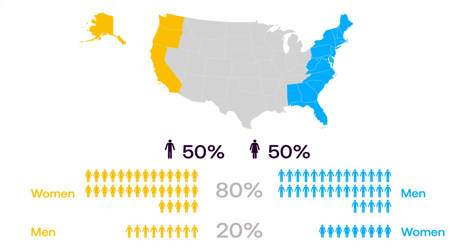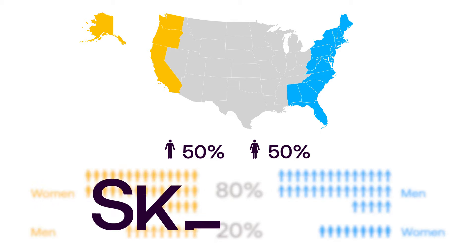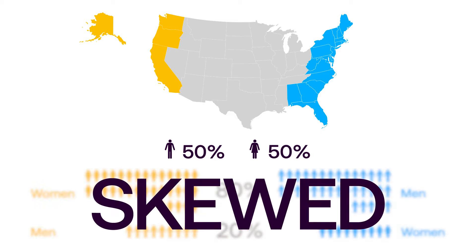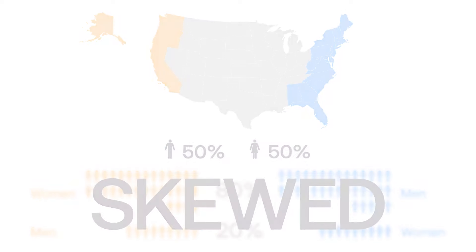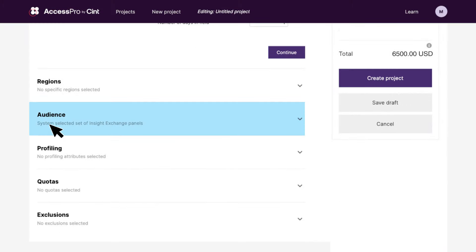Sure, you still have your overall 50-50 men to women ratio, but one segment in each region is underrepresented proportionally. Your data is now skewed and your responses are no longer an accurate representation of your true audience.